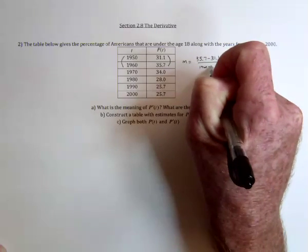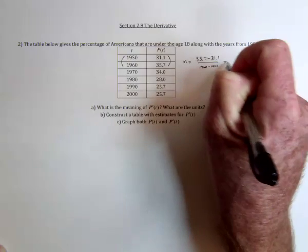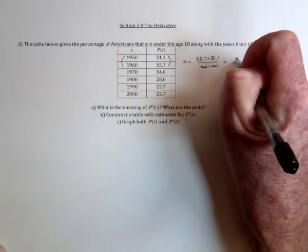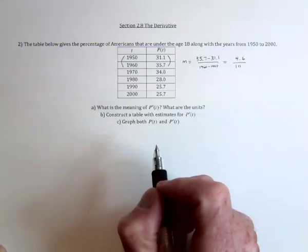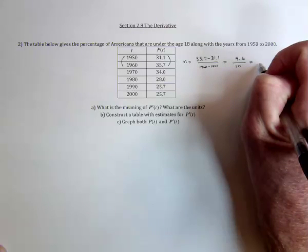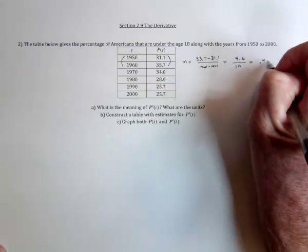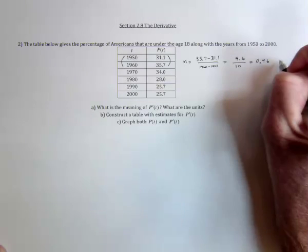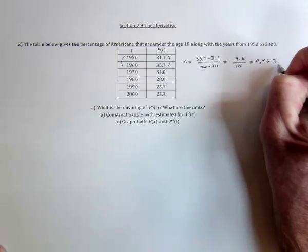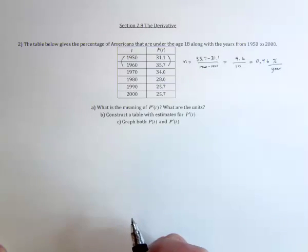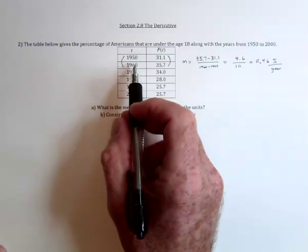So 1960 minus 1950. So this would be 4.6. And so it actually went up by about half a percent per year. So this was in percent, and the 10 was in years.